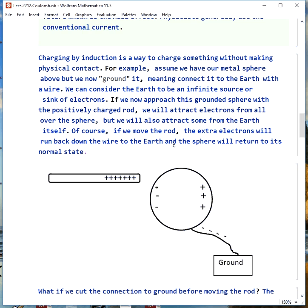Now, if you move to this grounded sphere with a positively charged rod, we will attract electrons from all over the sphere, but we'll also drag up some from the Earth itself. Now, if we move the rod, the electrons run back down the wire to the Earth, and the sphere goes back to normal.